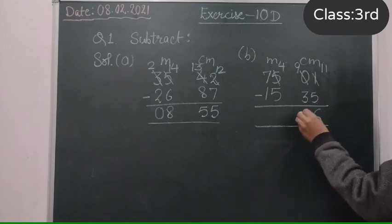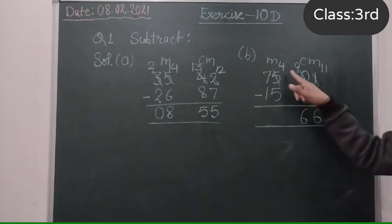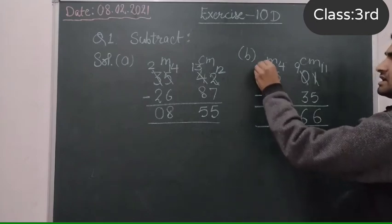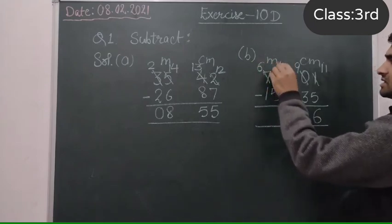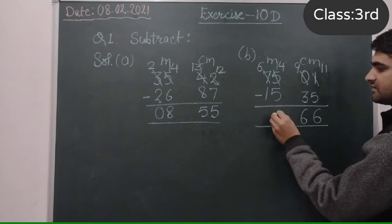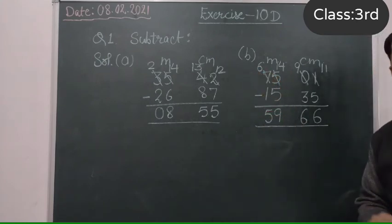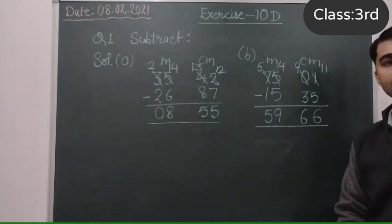And here 4 is also less than 5, so we will take carry from here. 14 minus 5 is 9, and here 6 minus 1 is 5. In this way you will do all questions.